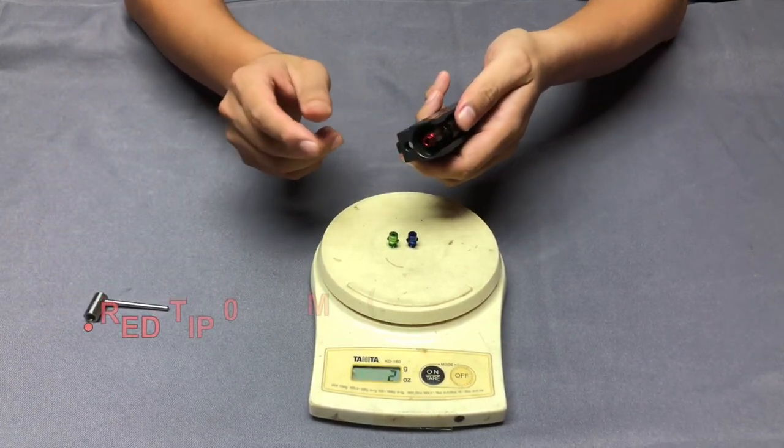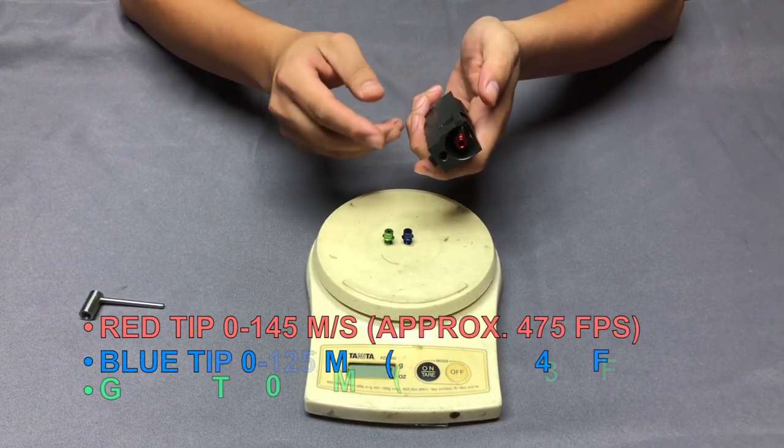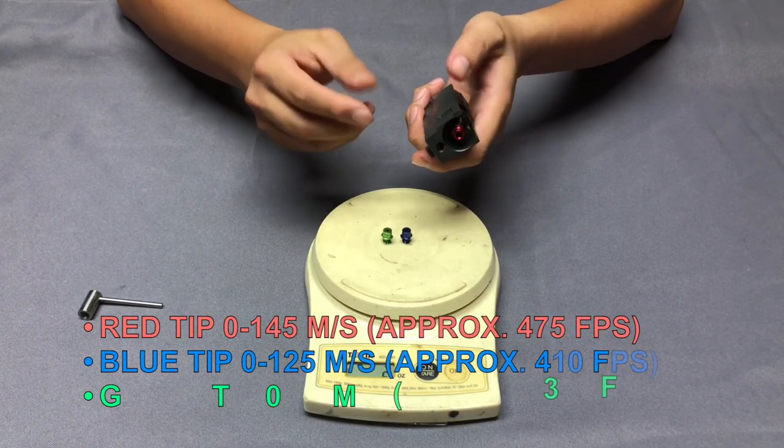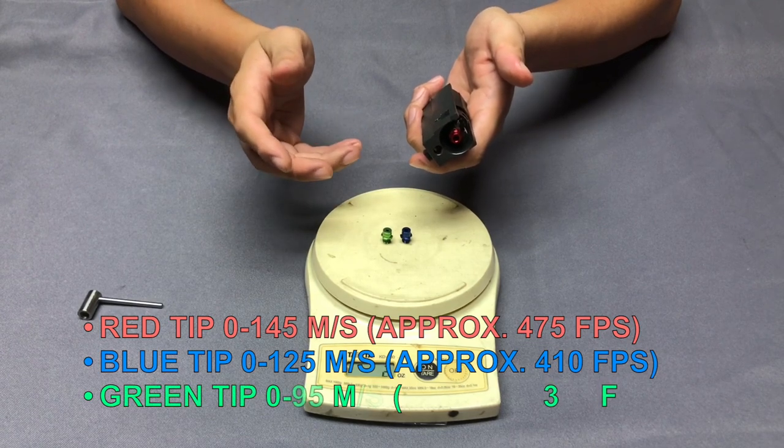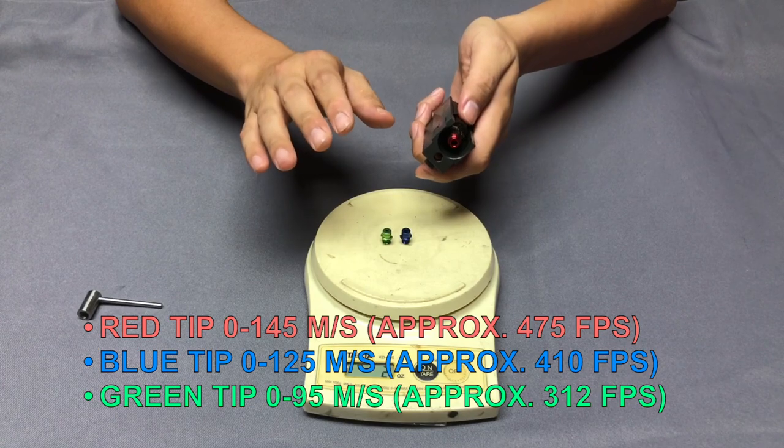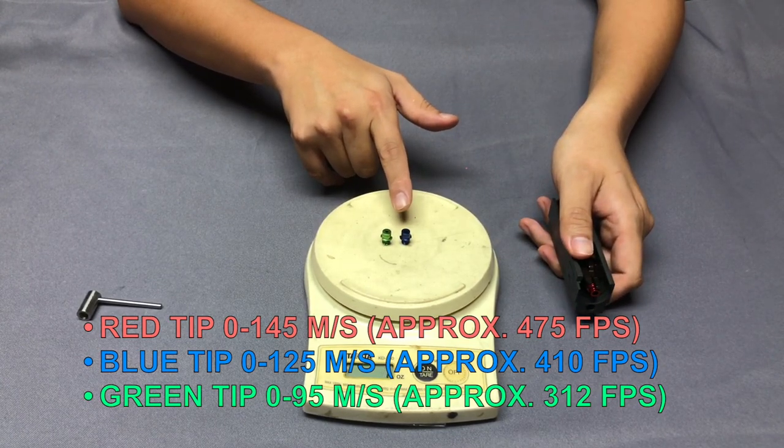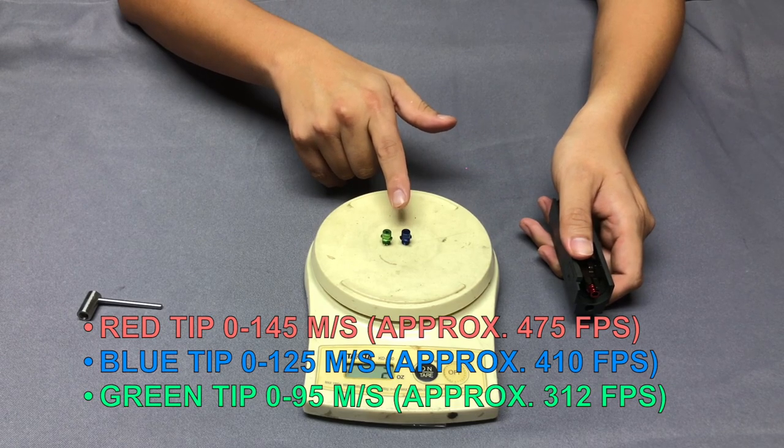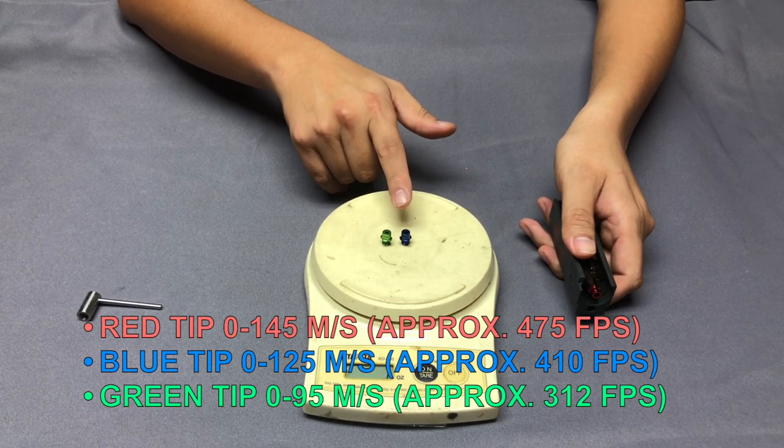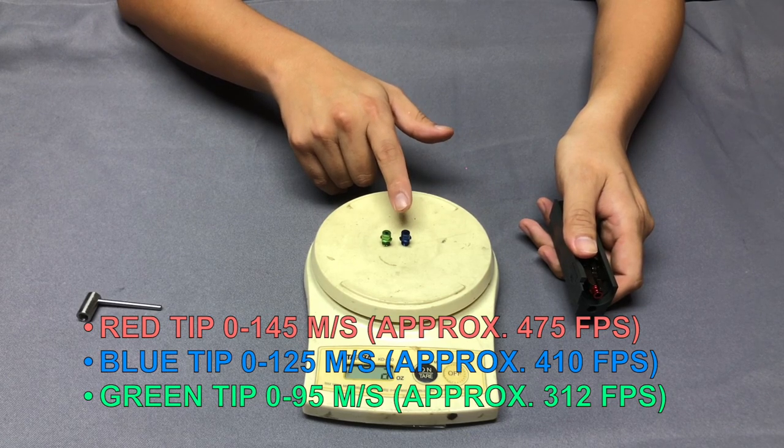And the red nozzle can adjust your FPS from 0 to 145 MPS, which means it will reach about 475 FPS. And if you want to turn down the FPS, you can use the blue nozzle. They will be able to change your FPS from 0 to 125 MPS, which means about 410 FPS.